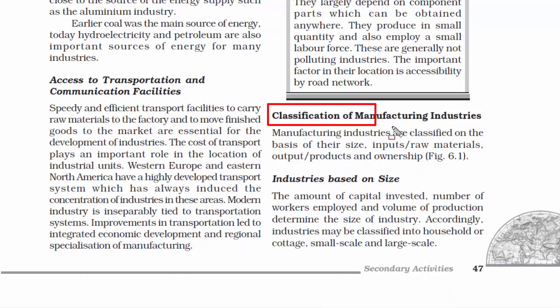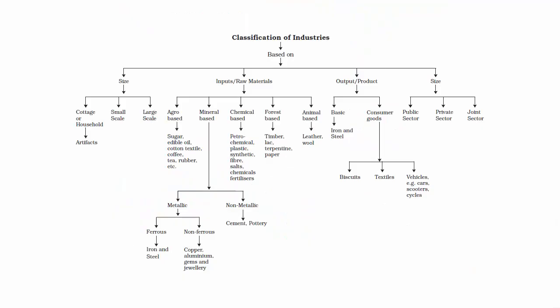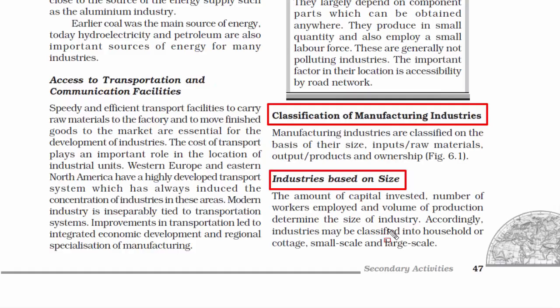Now we are going to read about the ways in which manufacturing industries are divided — purely to understand secondary activity in much more depth. We are going to first understand the classification of industries based on size. It is easy to understand that if an industry is big and massive, there is a lot of investment that goes into it and the number of workers would be large. Under this, we have three more categories.